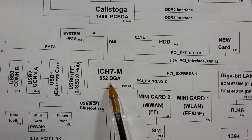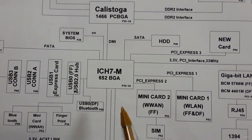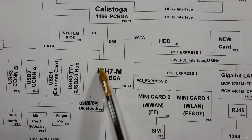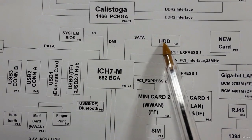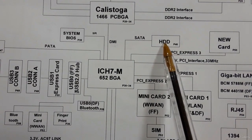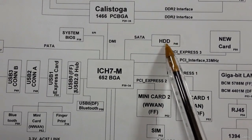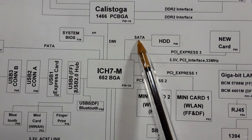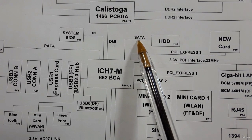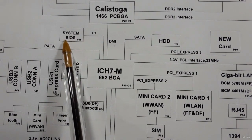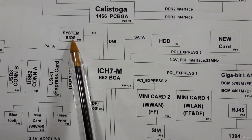The ICH is a very important chip — it is connected to the whole motherboard. The ICH controls the HDD, or hard disk drive. The type of hard disk drive used here is SATA, not IDE or SCSI. It is also connected to the system BIOS, the basic input/output system.